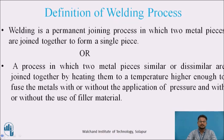Now we are going to start the definition of welding process. In simple terms, the following points about the welding process are: welding is a metal joining process; it joins two metal pieces to produce a single metal piece; it creates permanent joints; welding is basically a thermal process; and welding process is possible both in ferrous and non-ferrous metals. Welding is a permanent joining process in which two metal pieces are joined together to form a single piece.